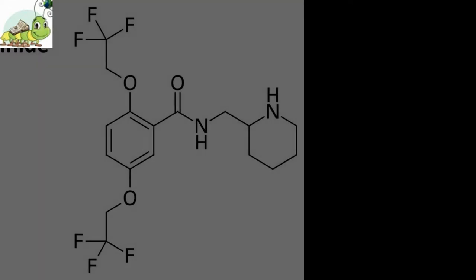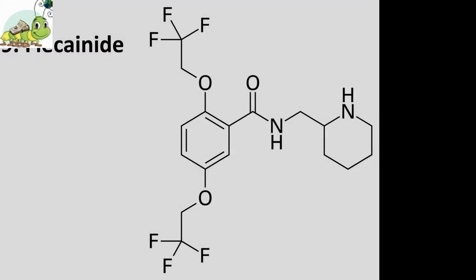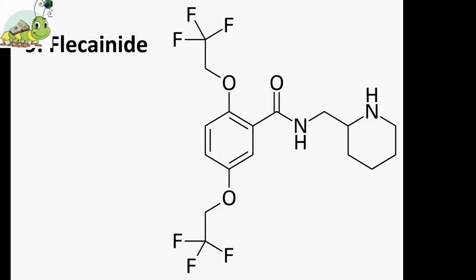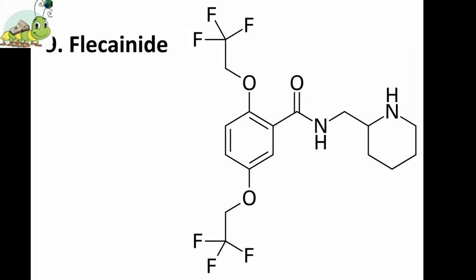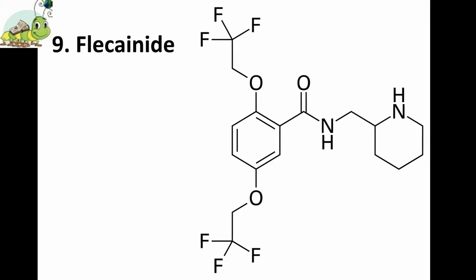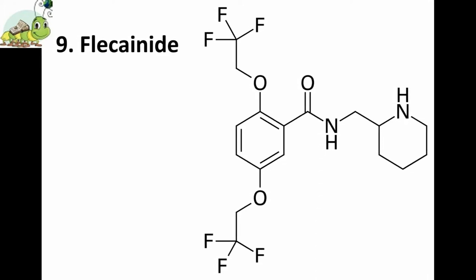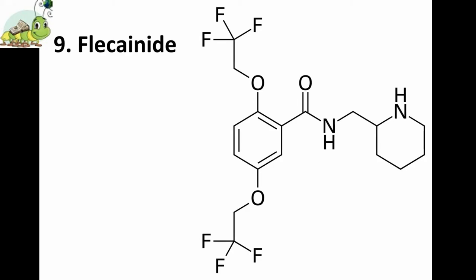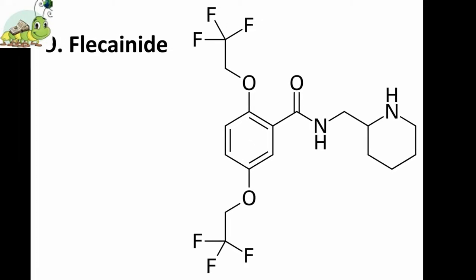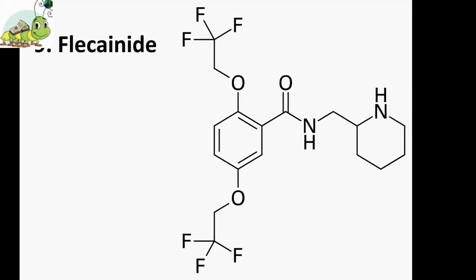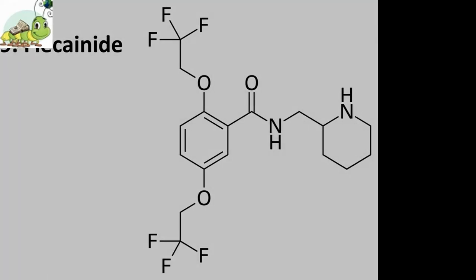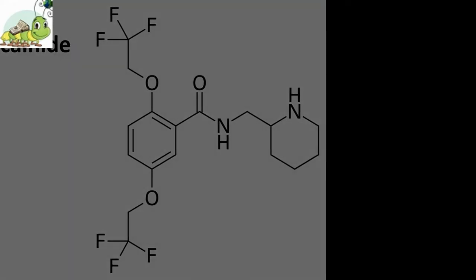Ninth drug: Flecainide. Flecainide is a fluorinated aromatic hydrocarbon examined initially for its local anesthetic action and subsequently found to have antiarrhythmic properties. Flecainide inhibits the sodium channel leading to conduction slowing in all parts of the heart, but most notably in the His-Purkinje system and ventricular myocardium. It has relatively minor effects on repolarization. Flecainide also inhibits abnormal automaticity.